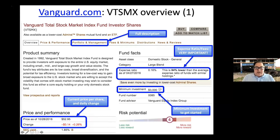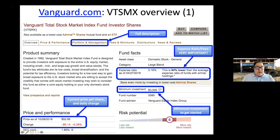The minimum investment is $3,000 for a regular account — though in a 401k it may be zero or as low as one dollar. The price was $52.95 in October 2016. For fixed income or bond funds, the SEC yield is more meaningful. Risk potential is rated 4 out of 5, as the stock market is a risky place — but risk and reward are tied together, so you have to take some risk to get any return.